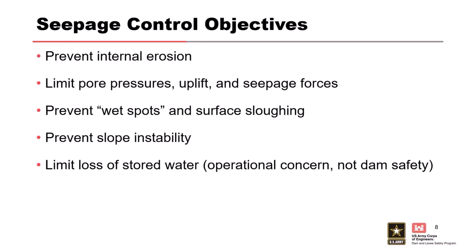We're also trying to limit pore pressures, reduce uplift, and reduce seepage forces. If you can reduce seepage forces enough to stop initiation of material movement, you've stopped internal erosion. Preventing wet spots and slope surface sloughing is also important — you don't want water emanating out of the toe or slope of the embankment. It could start sloughing and progressively progress back, though it's generally a slower mechanism.